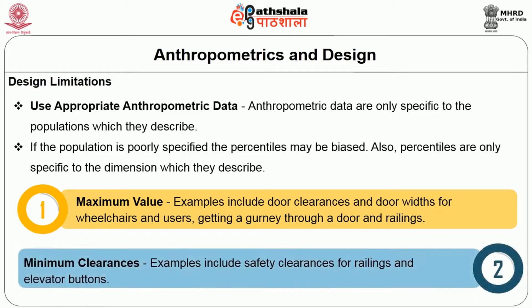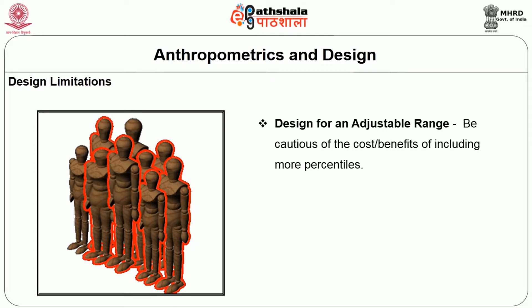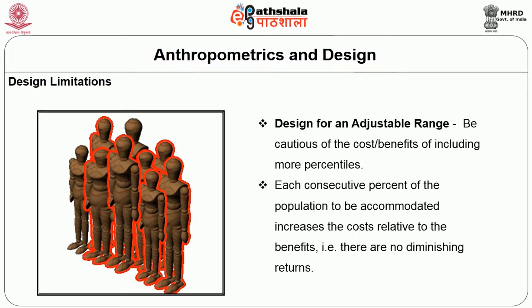Minimum clearances examples include safety clearances for railings and elevator buttons. For design with an adjustable range, you must be cautious of the cost-benefit relationship of including more percentiles. Each consecutive percent of the population accommodated increases cost relative to benefits, and there are diminishing returns. It is essential for designers to convince employers or design decision-makers to consider these maximum benefits.